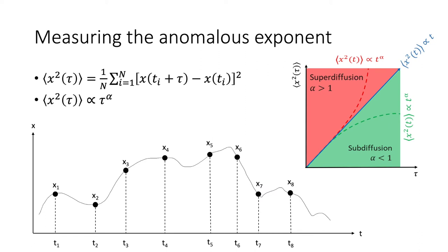We can begin measuring the anomalous exponent using experimental trajectories. Consider a trajectory with positions x1, x2, x3 and so on, each with corresponding times t1, t2, t3. We can explicitly calculate the mean square displacement using a lag time — this is what's commonly called a time-averaged MSD as a function of lag time. This time-averaged MSD should obey lag time to the power of alpha, and using this relationship we can fit the power law and obtain the value of alpha.